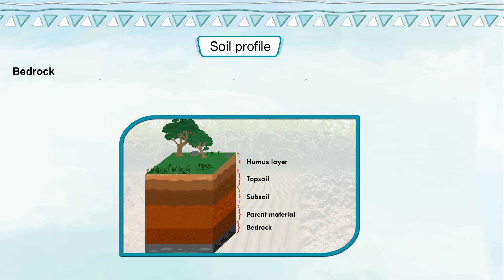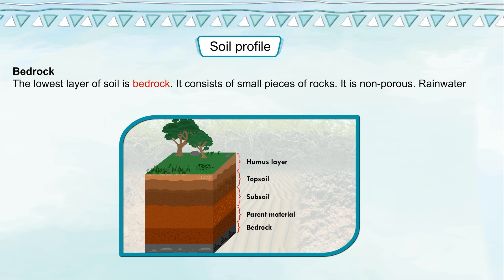Bedrock. The lowest layer of soil is bedrock. It consists of small pieces of rocks. It is non-porous. Rainwater gathers over it to form the water table.